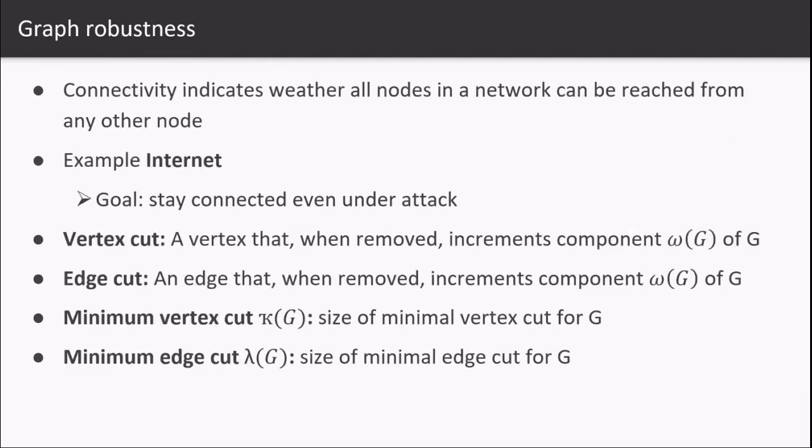Graph connectivity indicates whether all nodes in a network can be reached from any other node. Taking an example of the internet where the goal is to stay connected even under attack, for the reason of robustness.